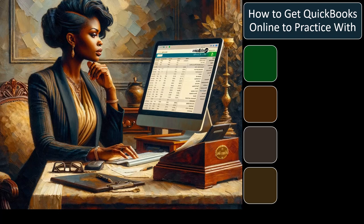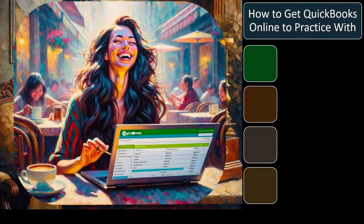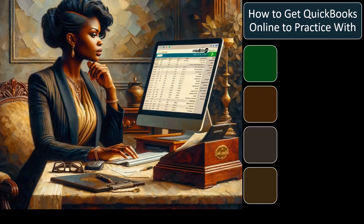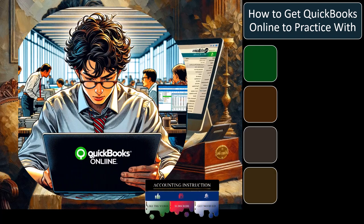When attempting to practice and learn any kind of software such as QuickBooks Online, one of the first obstacles we have to overcome is how we can get access to the software — possibly for free — and in a format best suited to the practice we would like to do. It's useful to categorize software: some types let you create multiple files once you have access, while others require you to pay for a new piece of software every time you create a new file.